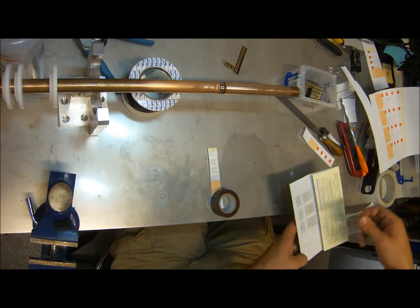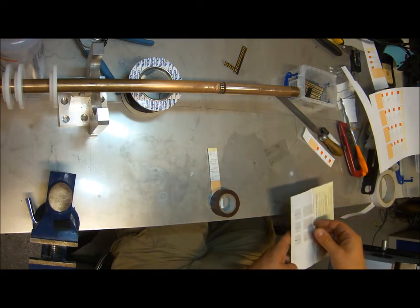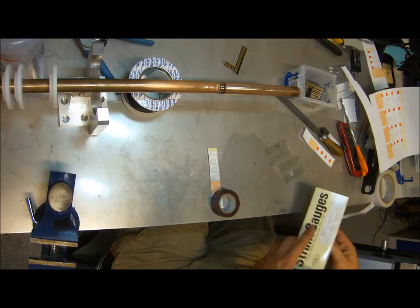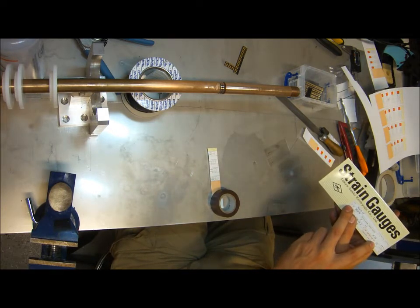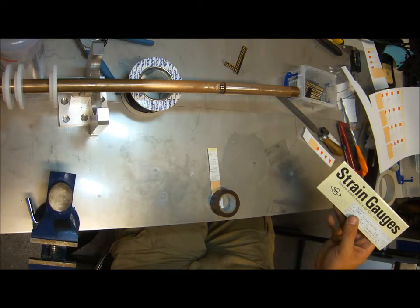And then the string gauging can begin. So we select four string gauges. In this case, if it's phosphobronze, use those ones, FLK217.